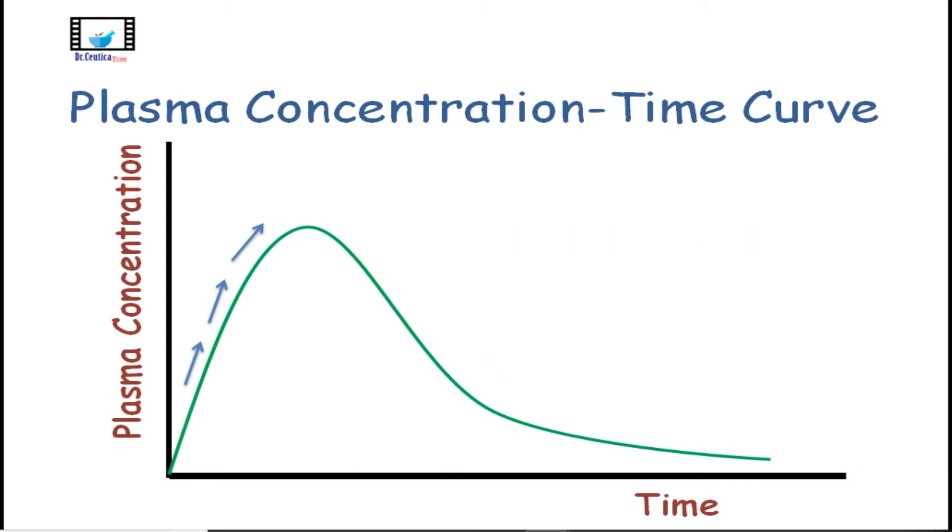In the segment where the plasma concentration is going up, this is termed the absorption phase. It is where absorption is taking place, meaning that the drug is moving or being moved from the intestine to the bloodstream, which would add to the concentration in the plasma every time more drug comes in from the intestine to the general circulation.